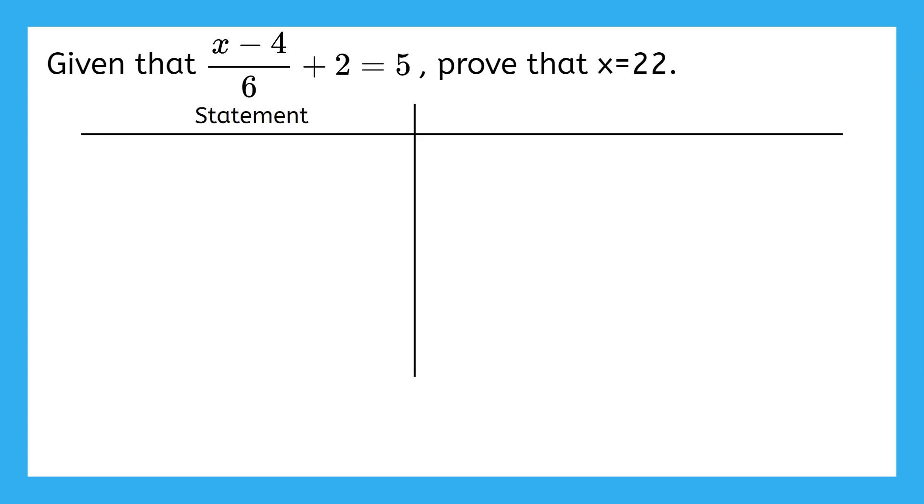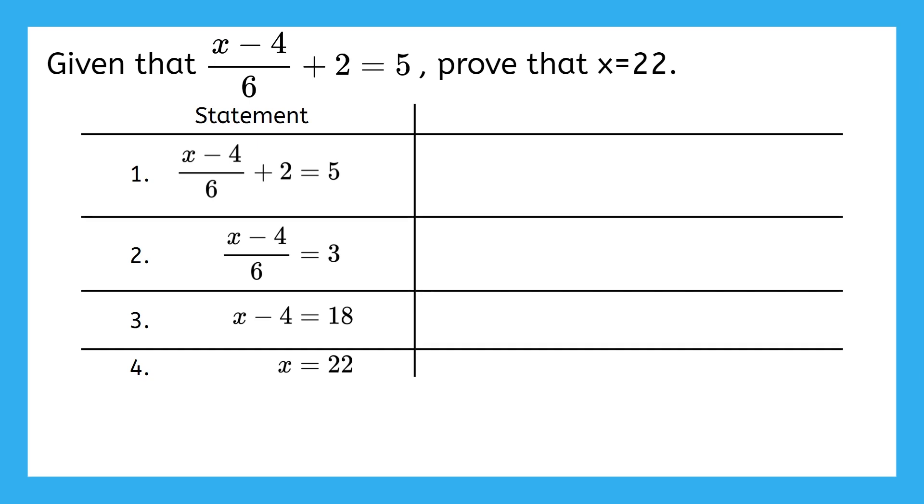This is where we'll put all of our math work. I'm going to number the lines of my proof just to make them easier to talk about. We can separate each line to make it easier to read through as well. The very last statement in this column should always exactly match what we were told to prove in the problem. See how we were told to prove that x equals 22? And our final statement here is x equals 22? Those match.